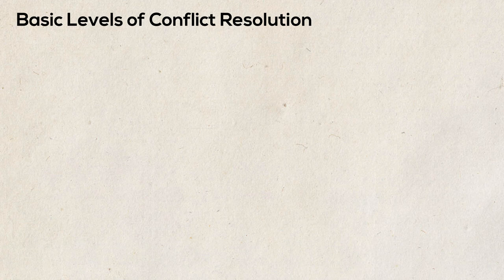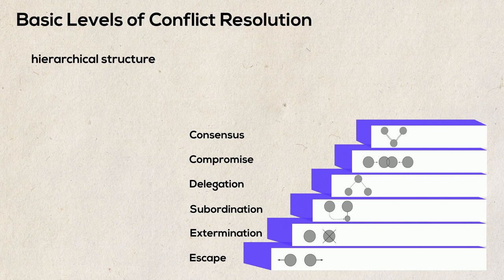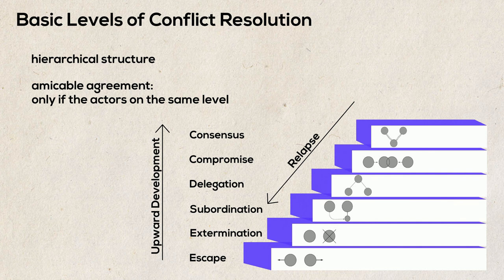The model of the basic levels of conflict resolution has a hierarchical structure, but it is not certain that the next higher level will always be reached, since a worsening of the conflict causes a relapse to a lower level. It should be noted that an amicable agreement between the parties will only be possible if the actors are at the same level — meaning a consensual solution is only possible if both parties strive for a consensus. However, if one of the actors is still at the compromise level, only a compromise solution can be achieved. Thanks for watching and let your skills grow.